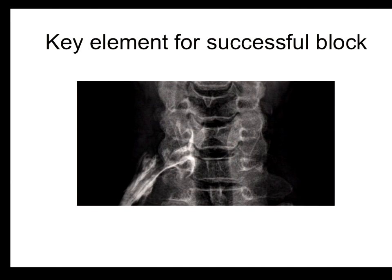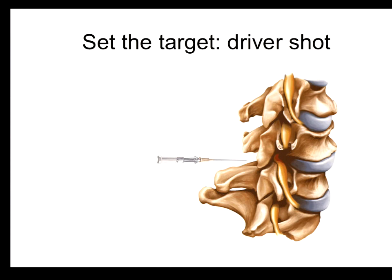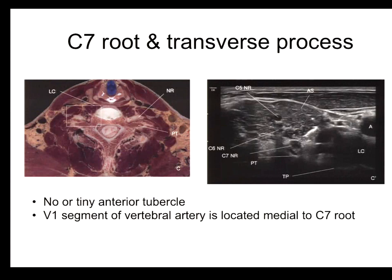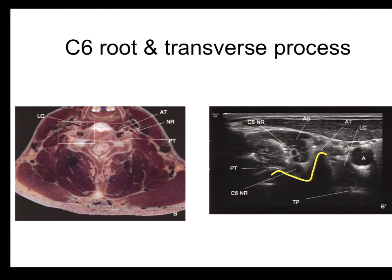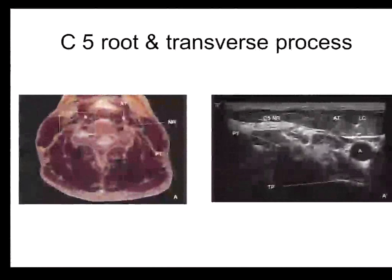There are several keys to achieving a successful block. First, set the target in the right position. If you want to block at C7 or C6, you must identify the correct level. There is some anatomical variation, but the transverse process shape is a very useful landmark for identifying the C7 root. Another way to identify C7 is the absent or tiny anterior tubercle of the transverse process. For C6, you can find a prominent anterior tubercle and a V-shaped relationship between anterior and posterior tubercle, with the hypoechoic C6 root emerging from that groove.